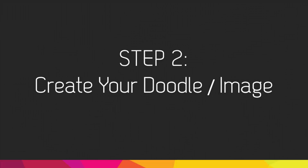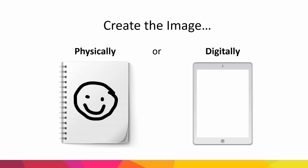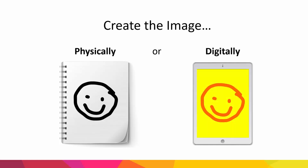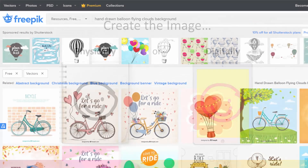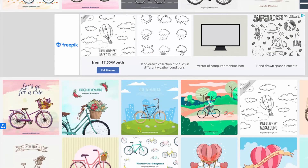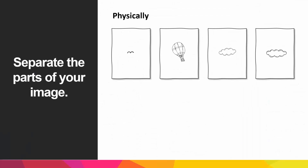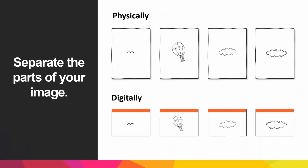Once you have it installed, the next step is to make your doodle or image. You can make it on physical paper or on a digital screen. Since I personally don't have great drawing abilities, I prefer using digital graphics made by others. I got all of mine from freepik.com, which is what I use for many of my videos. Once you have the image you want to use, make sure each part is separated on a different sheet of paper or, in my case, a PowerPoint slide, since I do most of my graphic editing in PowerPoint.